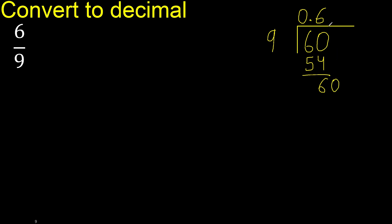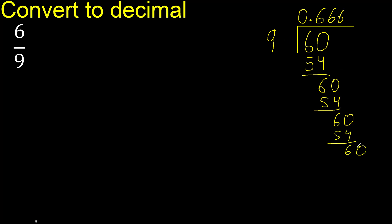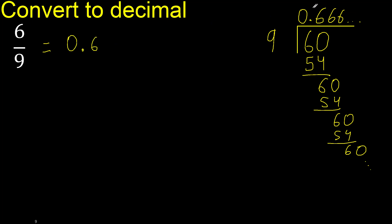Complete — always complete with 0. 60 multiplied by 6 gives 54. Subtract: 60 minus 54 is 6. This repeats again — 6 keeps repeating. Therefore, like this, the answer is 0.666... repeating. Finish.